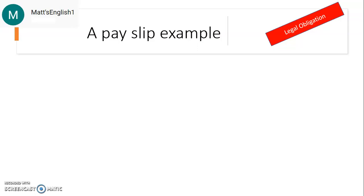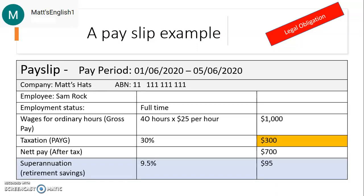Let's have a look at what is included in our payslip. The first thing that must be there is the pay period. In this example, the person has been paid from the 1st of June until the 5th of June — so that is a weekly payment.